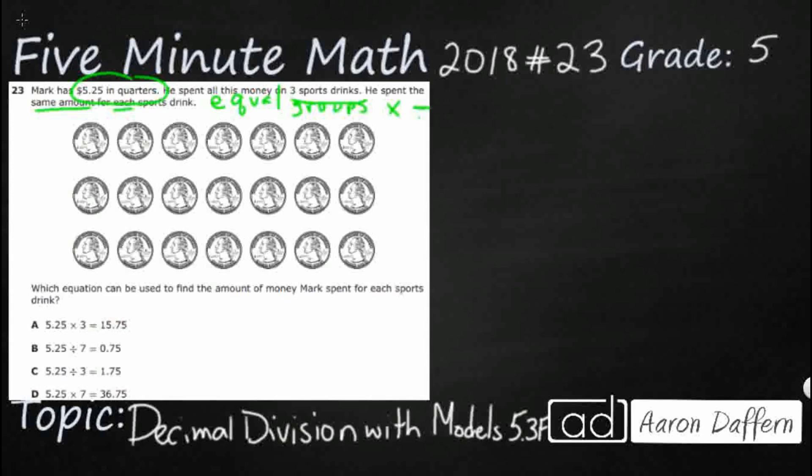So here's his money. They've got his $5.25 all split out in quarters here and then we need to find the equation that we used to find the amount of money that Mark spent for each. So how much money did he spend for each? Well, let's see if we can figure it out a few different ways. So let's draw a strip diagram here. So we know how much money he has. Our total is $5.25.